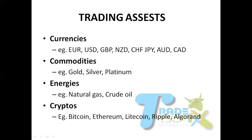The last category is crypto — cryptocurrency. You can actually trade cryptocurrency in the Forex market. Once you learn how to trade the Forex market, you can trade the cryptocurrency market. Examples of cryptocurrencies include Bitcoin, Ethereum, Litecoin, Ripple, and Algorand. There are many examples of cryptocurrency.